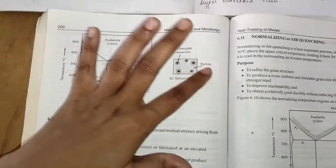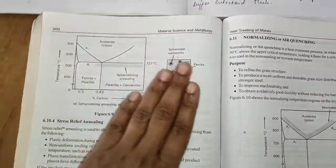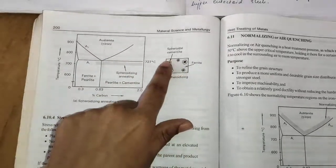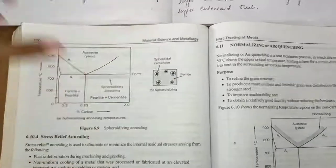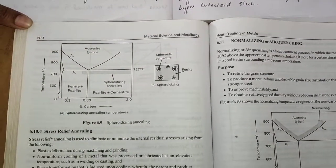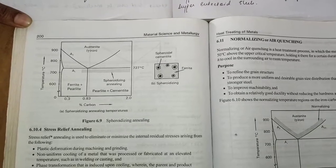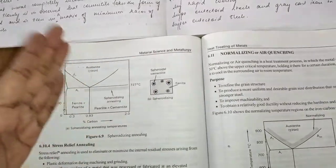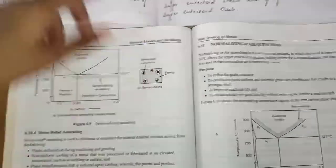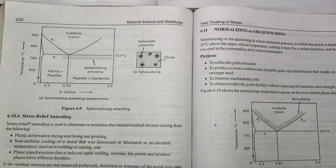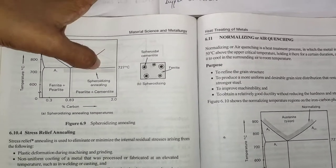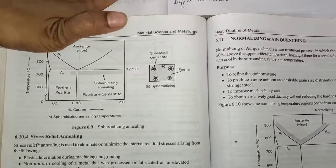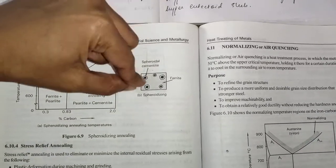It will cause the cementite phase to assume the globular structure on the matrix or on the surface of the ferritic phase. Alpha ferrite is active, cementite is also active below 727 degrees Celsius. Since it is in the formation of the spheroid, it's called spheroidizing.